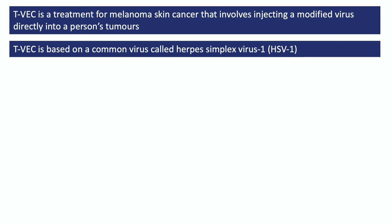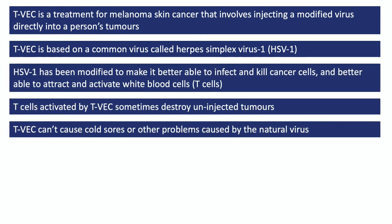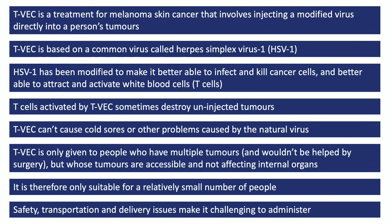TVEC doesn't help everyone it's given to and there's a lot of room for improvement. To summarise: TVEC is a modified version of HSV-1, a herpes simplex virus, which has been changed to better infect and destroy cancer cells and to trigger an immune response. For some people, this immune response even leads to the destruction of tumours that weren't injected. The makers have also made it much safer than the natural virus. But TVEC is only suitable for a small number of patients — those who wouldn't benefit from surgery or other treatments and whose tumours can be injected. Practical issues around safety, storage, distribution and delivery also limit who can receive it. For more on immunotherapy or targeted therapies for melanoma, these are covered in other videos.